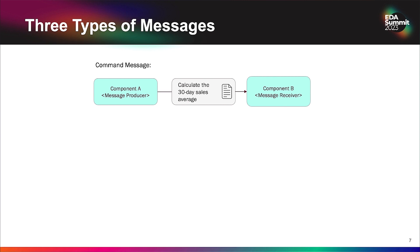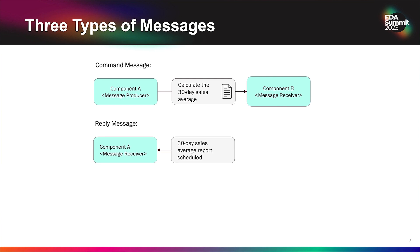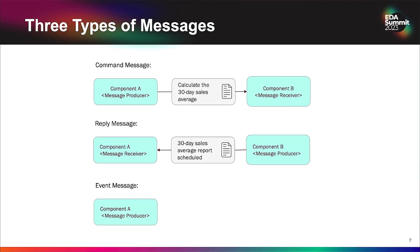It could be that these components are directly communicating with one another, or we have things like message brokers in between. We also have a reply message. This is where a component — a message receiver — is waiting to get a reply back, perhaps from a command message. Component B does the work of calculating the 30-day sales average and then sends back the report data on some asynchronous response. So we have command and reply messages.